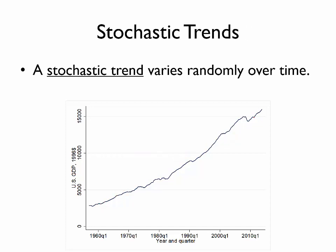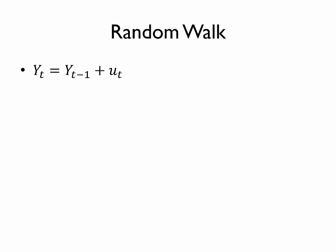And so we might consider a stochastic trend. A stochastic trend is one that varies randomly over time. One example of a stochastic trend is known as a random walk. In a random walk, the time series variable y sub t is modeled as being equal to that same time series variable in the previous period y sub t minus one plus another mean zero error u sub t. So we might wonder whether GDP is well represented by this particular time series process of a random walk.